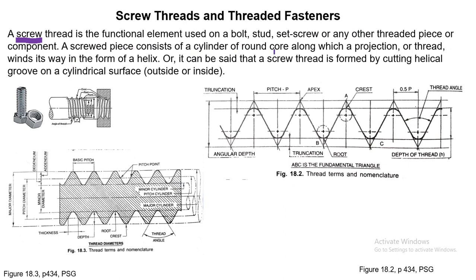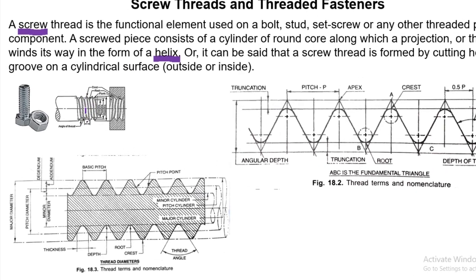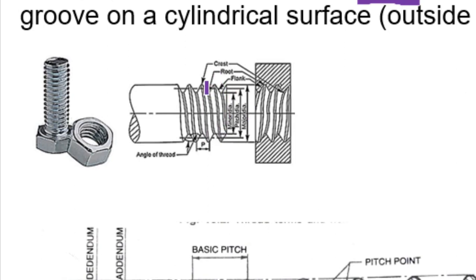A screwed piece consists of a cylinder or round core along with a projection or thread that winds its way in the form of a helix. Threads are found in the form of a helix — a curve generated by a point moving on the surface of a cylinder or cone in a circumferential direction at a constant angular speed, with a simultaneous uniform rate of advance in the axial direction. So every time you make one round, you advance a certain distance.